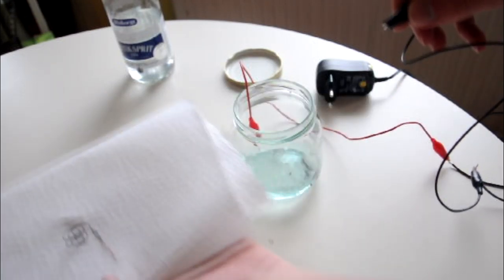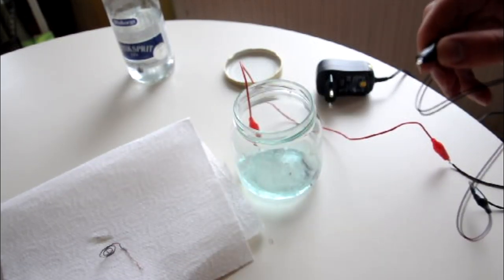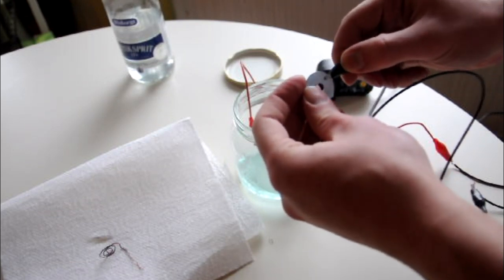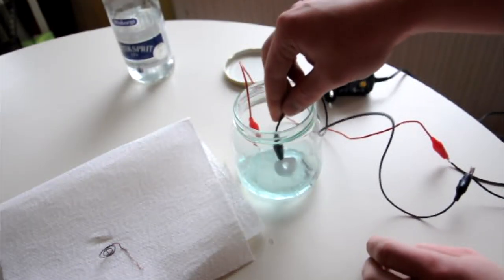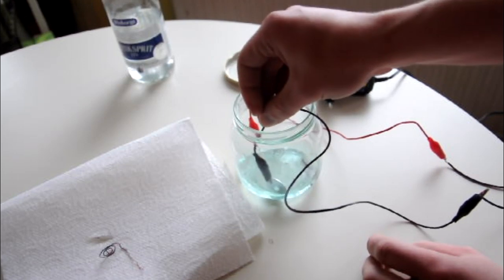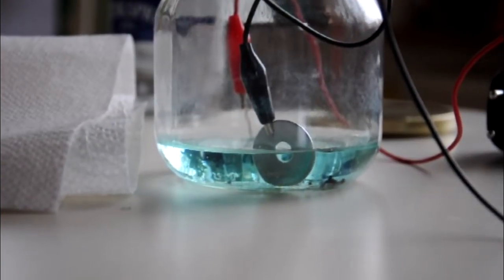And before I plug in the power supply again, I have set the power supply to 3V since this was the lowest voltage I could use. But of course you can play around with the voltage, timing, and how much copper you have in the liquid.